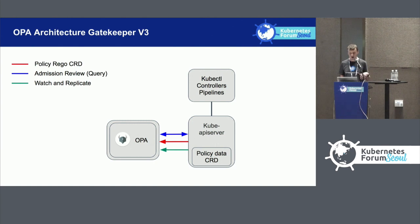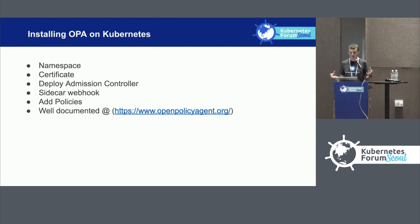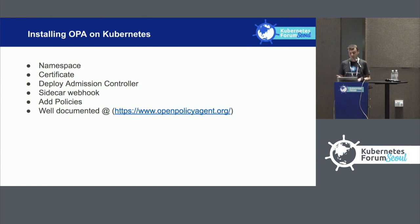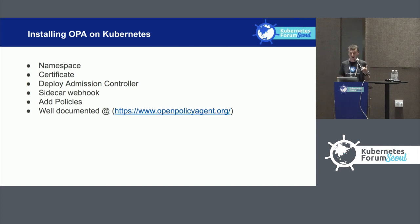To install OPA, you need a Kubernetes cluster with a namespace for OPA, a certificate for internal SSL — a self-signed certificate works fine — and then deploy the admission controllers and sidecar webhooks for the OPA server and kube-mgmt. Then you can add your policies. It's very well documented, and the tutorial walks you through getting installed, up and running, and getting some policies running. I'll hand back now to Amit, who will talk about Rego and give you some demos.